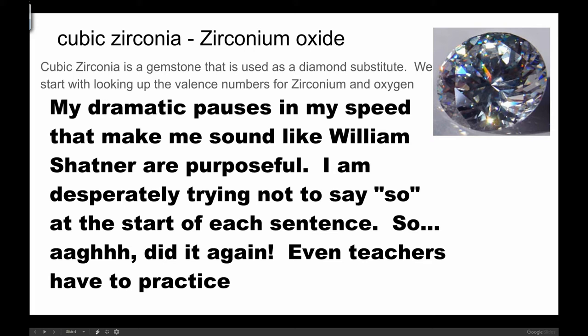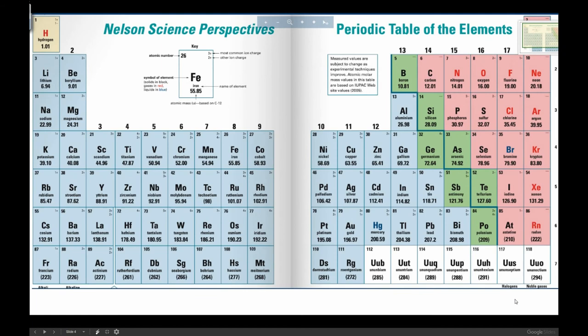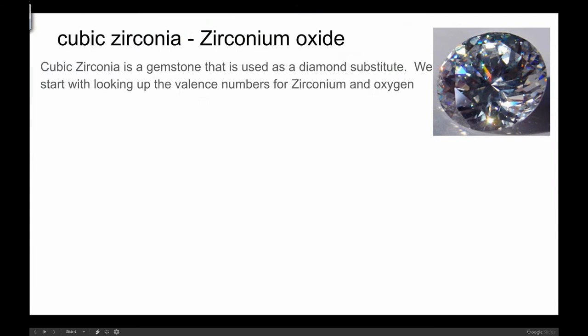Zirconium oxide, when it is in cubic form or in crystalline form, is a gemstone that is almost indistinguishable from diamond unless you've been trained. And it's a mixture of zirconium and oxide. So what do we do here? We look up at your table, and we look for oxygen and zirconium. And what you'll find written on the table, zirconium says plus four, oxygen says minus two.